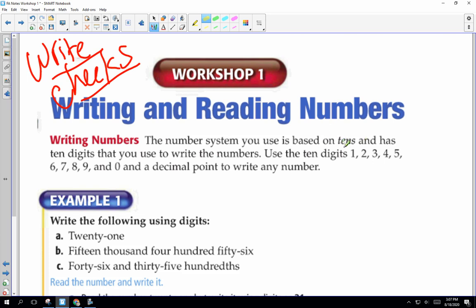So we're going to do a little practice on writing numbers and reading numbers. The number system we use is based on tens. So it also has ten digits, which are zero through nine, I'm sorry, one through nine and zero. So one through nine, and then zero. And then we have a decimal point. And with those ten digits and the decimal point, we can write any of the numbers we encounter.